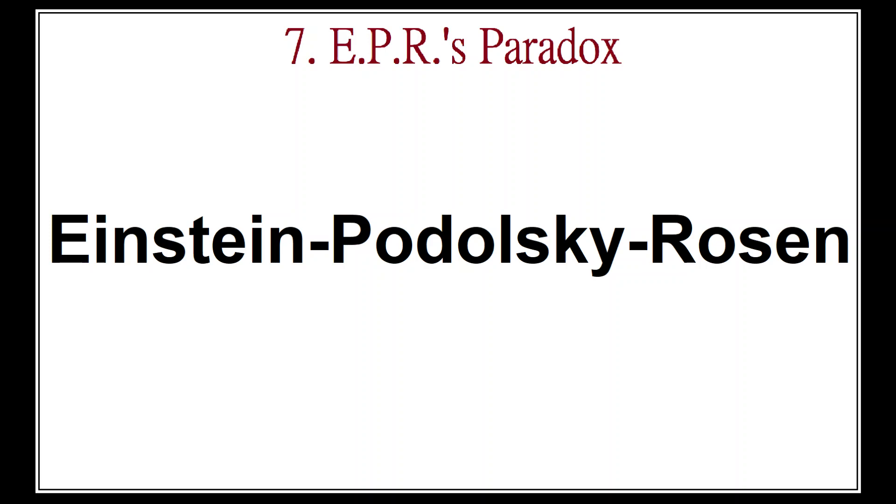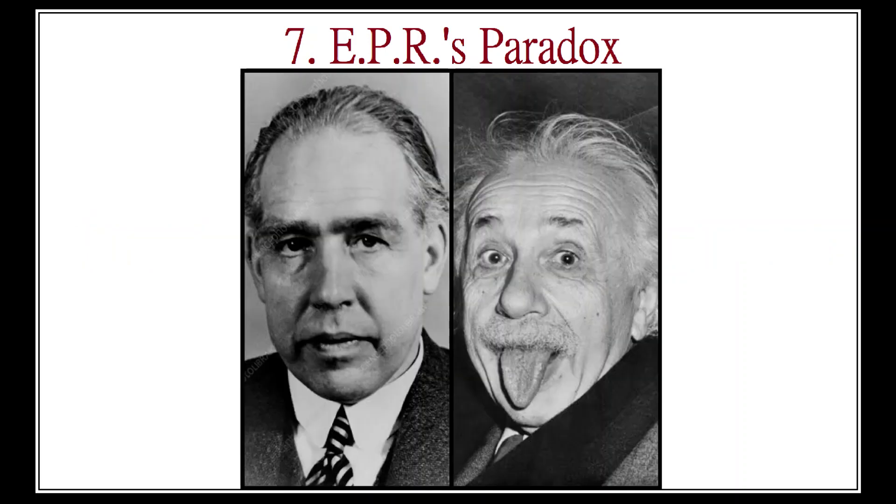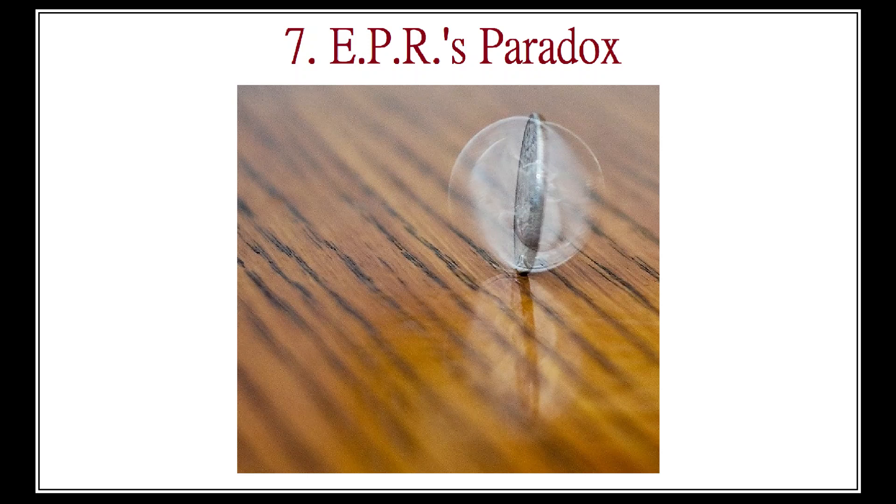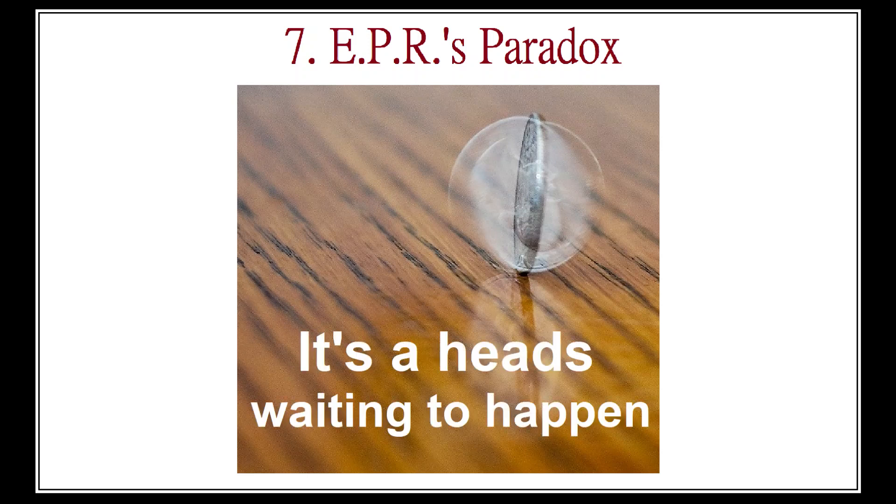For Einstein, the ultimate point of the paradox was to show that Bohr's interpretation of quantum mechanics, called the Copenhagen interpretation, is incorrect. Things are not indeterminate until we measure them. They are simply unknown before measurement, and we just haven't discovered all the hidden variables that secretly determine their behavior.